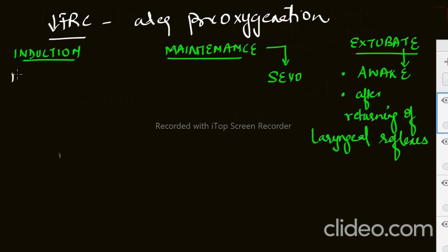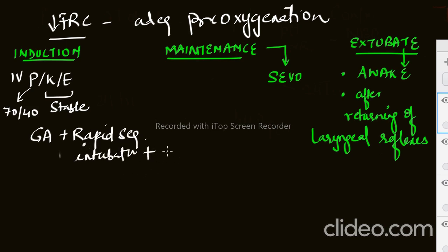In induction, we can induce the patient with IV propofol, ketamine, or etomidate. If the patient is hemodynamically stable, we can use these two. But in our history it was given that BP was 70 by 40, then we do not prefer propofol. We can prefer ketamine and etomidate. To know more about these drugs, you can check out my playlist about induction agents. We give the patient GA and then we will do rapid sequence intubation.